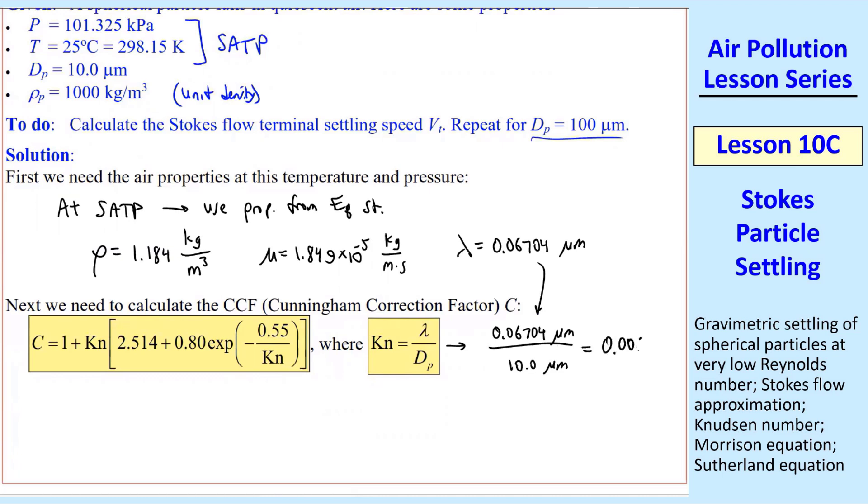And so the Knudsen number is 0.006704. Plug that into Cunningham equation, and I'll keep five digits here, 1.0169. And then finally,